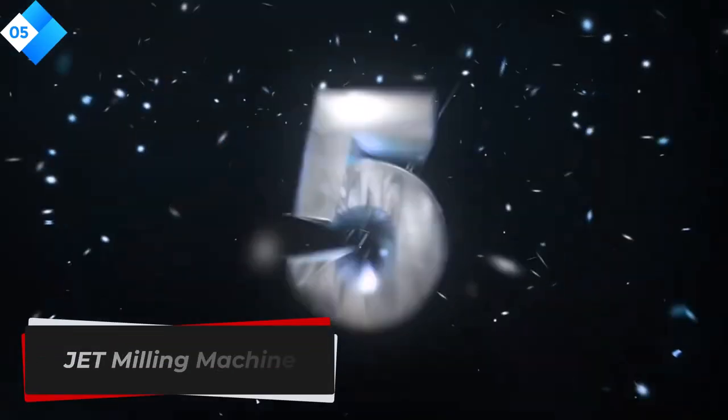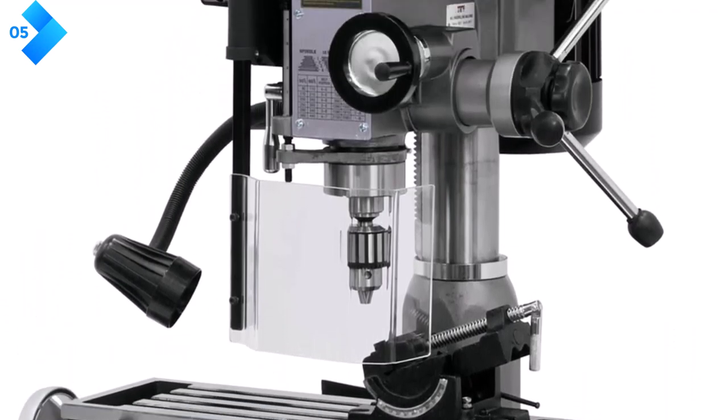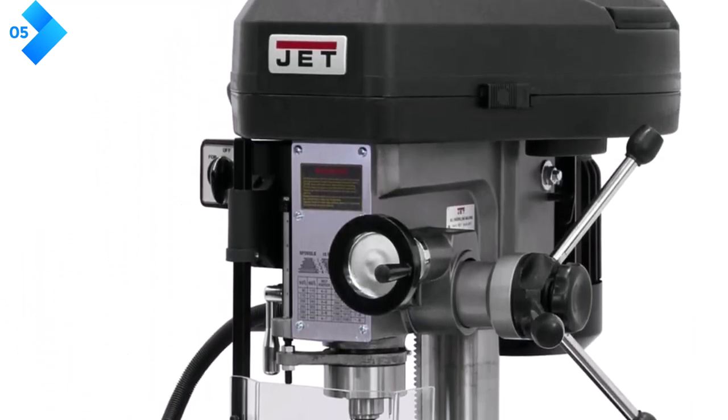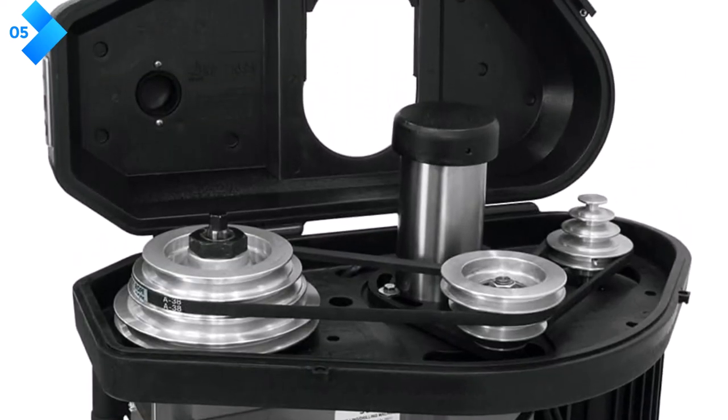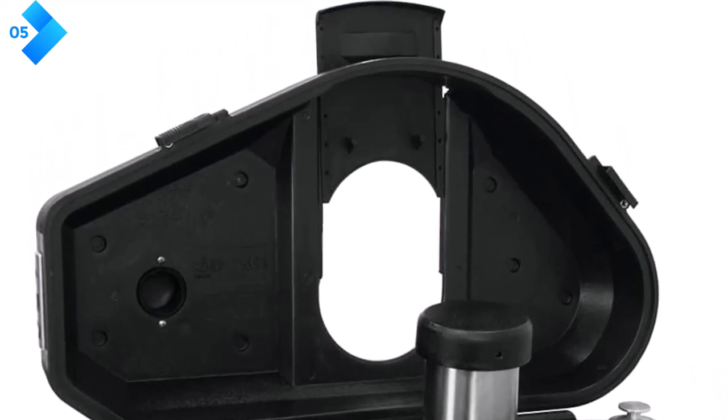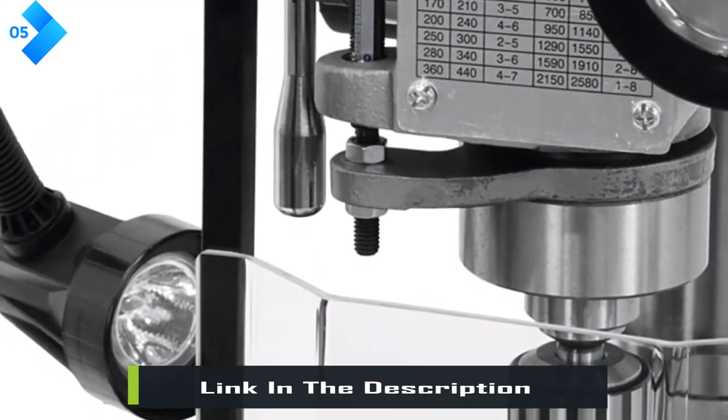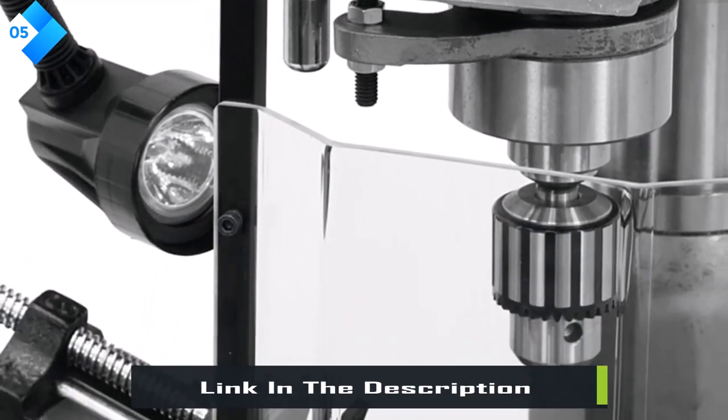Number five: Jet milling machine. This machine is a powerful and reliable tool that combines milling and drilling capabilities in one compact unit. Whether you're a professional machinist or a hobbyist, this machine offers the versatility and performance you need for your projects. Pros: powerful motor for reliable performance, multiple spindle speeds for versatility, durable cast iron construction for stability, built-in work lamp for visibility, adjustable work table for flexibility.